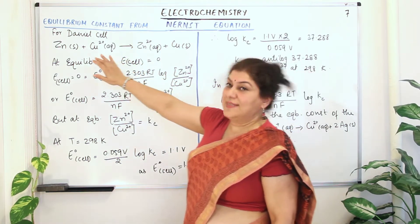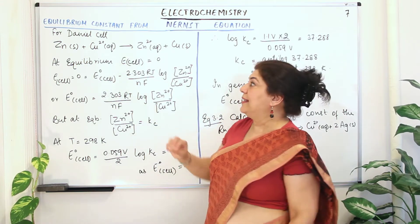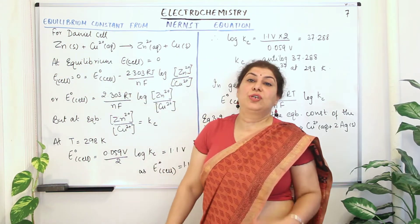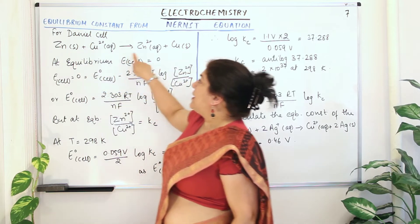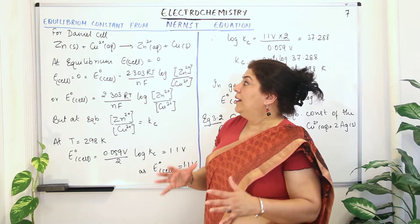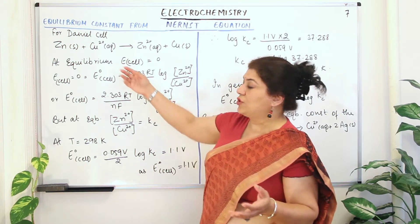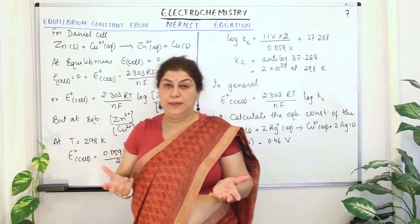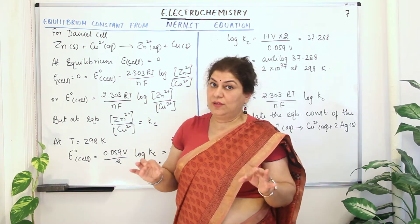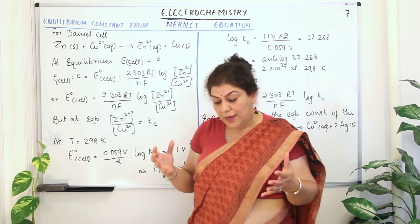If we take a Daniel cell, we have zinc and copper electrodes. The reaction taking place is that zinc is getting oxidized at the anode and copper ions are getting reduced at the cathode. Zinc gets oxidized to zinc ions and copper ions get reduced to copper metal. Under standard conditions — when all concentrations are one mole per liter — the E° cell for the Daniel cell is 1.1 volts.